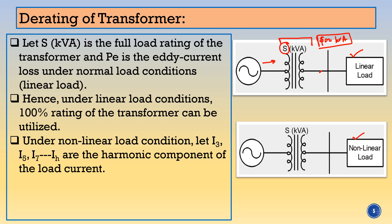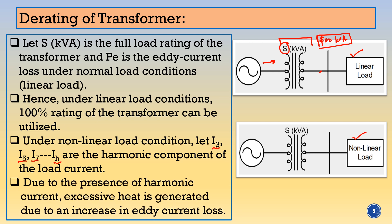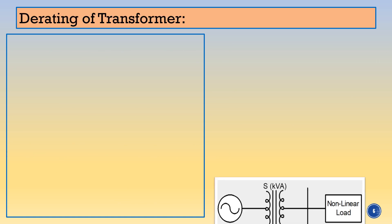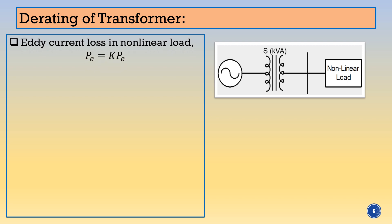Under the nonlinear load — suppose instead of linear load, a nonlinear load such as computer load or power electronic drives, adjustable speed drives are connected. As the nonlinear load is connected, it carries harmonic components of the current: third, fifth, seventh harmonics, likewise up to the H-th harmonic. We can consider up to the 50th harmonic. Due to the presence of this harmonic current, excessive heat is generated. Hence the transformer must run on D rating. Eddy current losses under the nonlinear load PEN = K × PE, so it is going to increase.